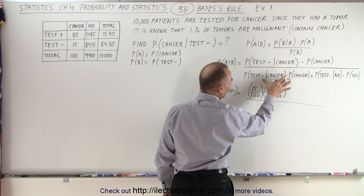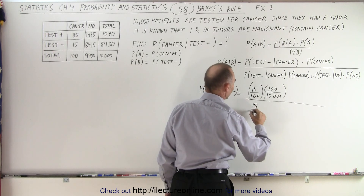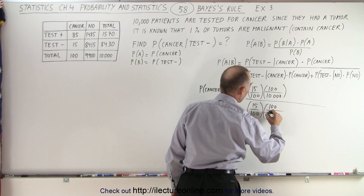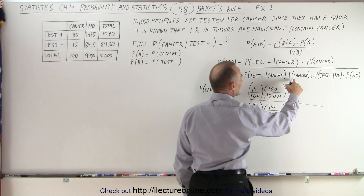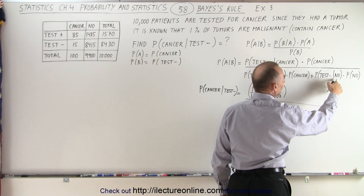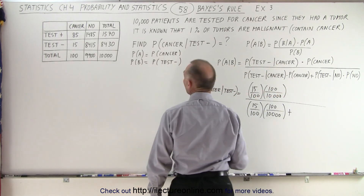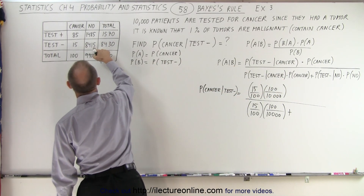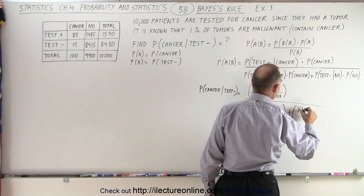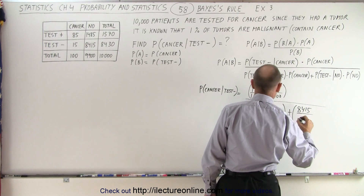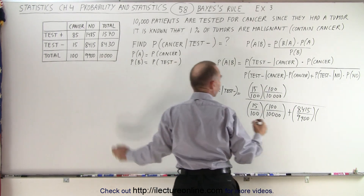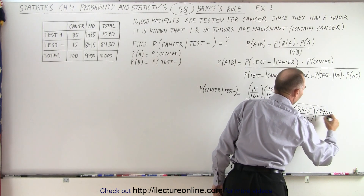In the denominator, we repeat the same thing: 15 out of 100 that have cancer but tested negative, times the probability of having cancer out of the 10,000 patients, plus the probability of the test being negative given that the patient does not have cancer. So 8,415 out of 9,900 patients will test negative if they don't have cancer, so that is 8,415 divided by 9,900, multiplied by the probability of not having cancer, which is 9,900 over 10,000.